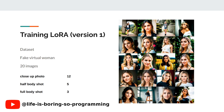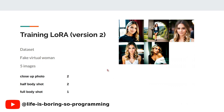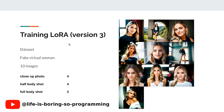These are the images of version 1 — the same 20 dataset images used in the previous experiments. Version 2 has only 5 images: 2 close-up, 2 half-body, and 1 full-body image. Version 3 has 10 training dataset images: 4 close-up, 4 half-body, and 2 full-body images.